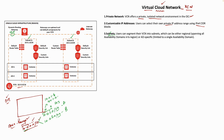Users can segment their VCN into subnets which can be either a regional subnet or an AD-specific subnet. When OCI started, even within Gen 2, when you created an availability domain you used to create AD-specific subnets, limited to a single availability domain. But now Oracle recommends having a regional subnet which spans all availability domains. Subnet A, for example, is available on AD 1 and AD 2 — it is a regional subnet available across availability domains.